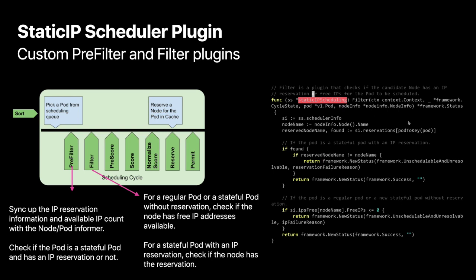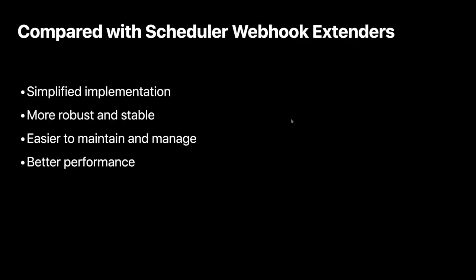On the right side, this is the code segment showing how we implement this static IP scheduler plugin. This is the example of the filter plugin — as you can see, it's quite straightforward and simple. Compared with the existing approach using scheduler extenders as a webhook, the scheduling framework plugin provides a much simplified implementation. Because it runs as a lightweight plugin without managing the event cache itself, it's much easier to handle errors — making it much more robust, stable, and easier to maintain and manage.